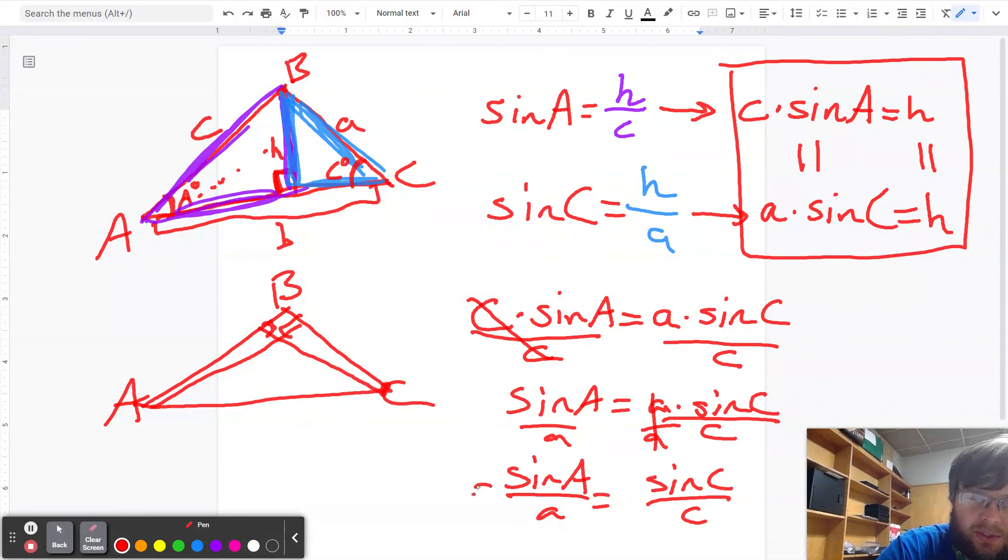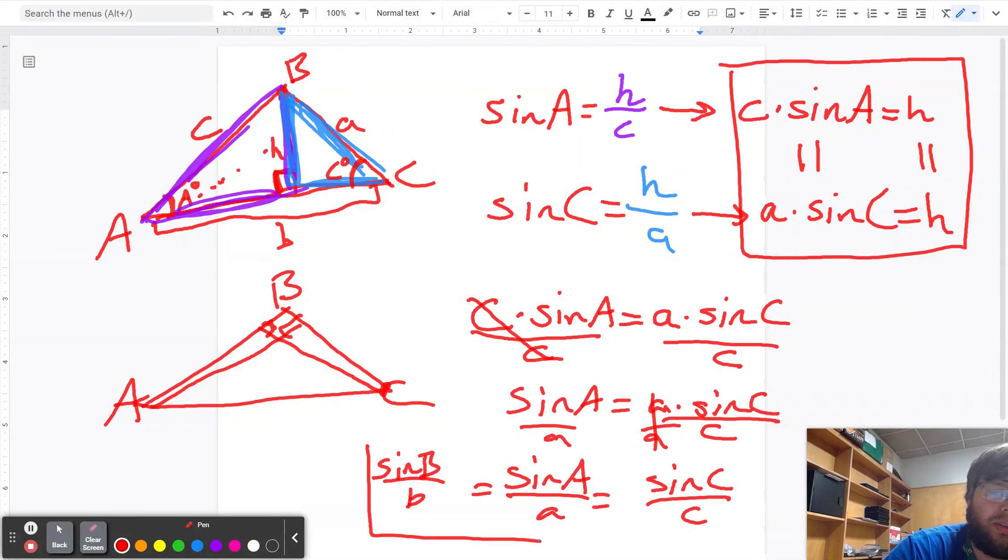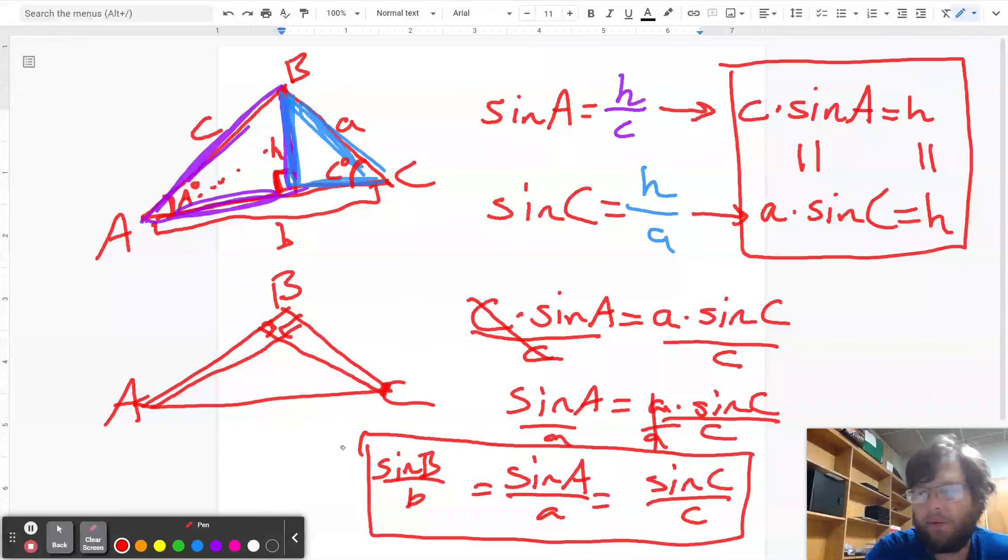And so just based on symmetry, I can say that the sine of B over B is also going to be equal to those. So that's how you get the formula for the sine rule.